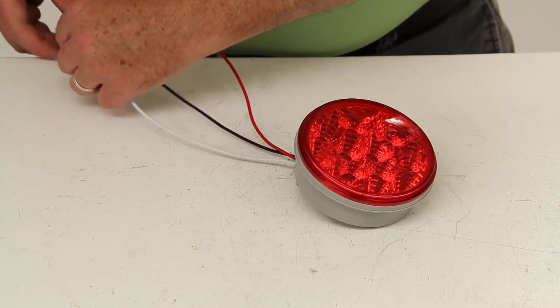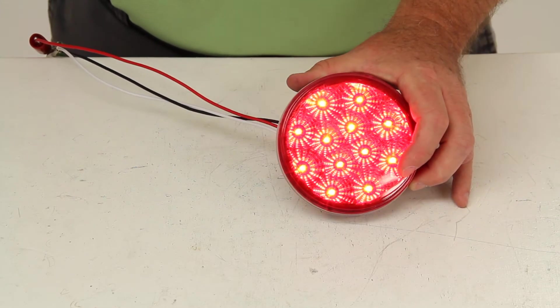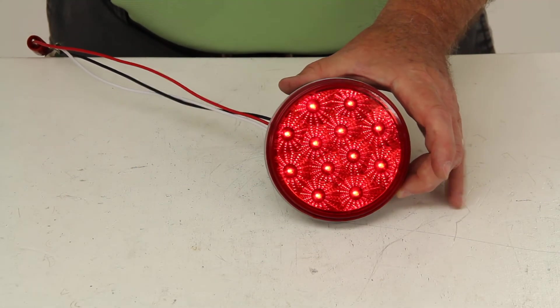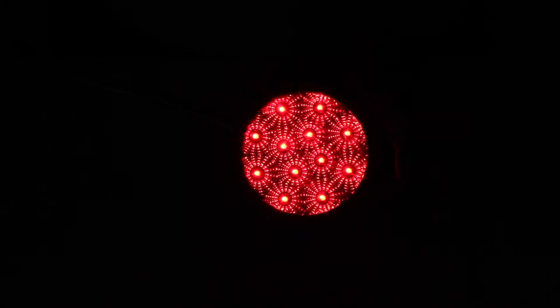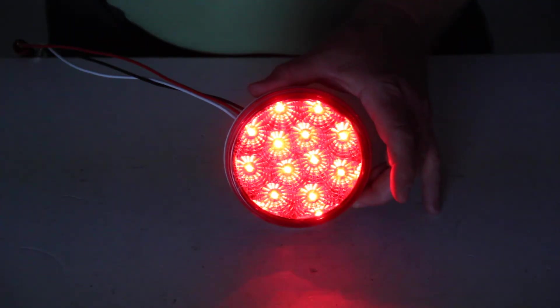That will be the stop and turn. And now I'm going to turn off the overhead lights to give you an idea. That will be the tail light function in the dark, and that would be the stop and turn.